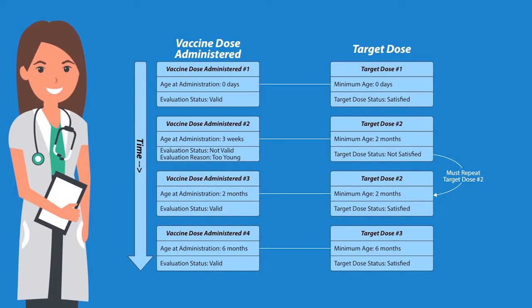If a dose is valid, it does not need to be repeated, and the next target dose can be forecasted. If a dose is not valid, a repeat vaccine dose must be administered to satisfy the target dose. Once evaluation is complete, the process model determines whether forecasting is required.